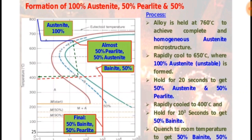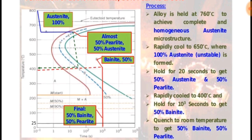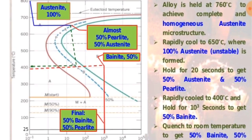Rapidly cool to 650 degrees Celsius where 100% austenite, which is unstable, is formed. Hold for 20 seconds to get 15% austenite and 15% perlite.